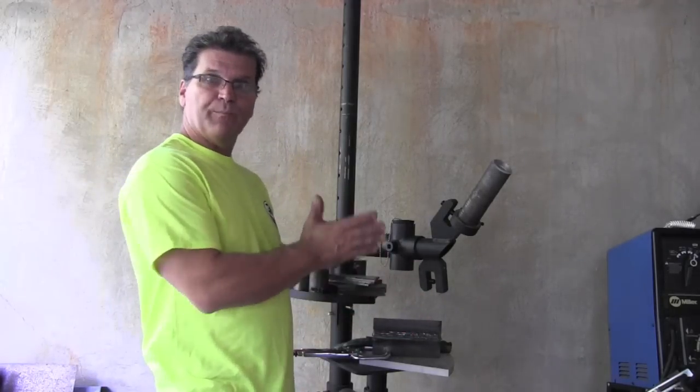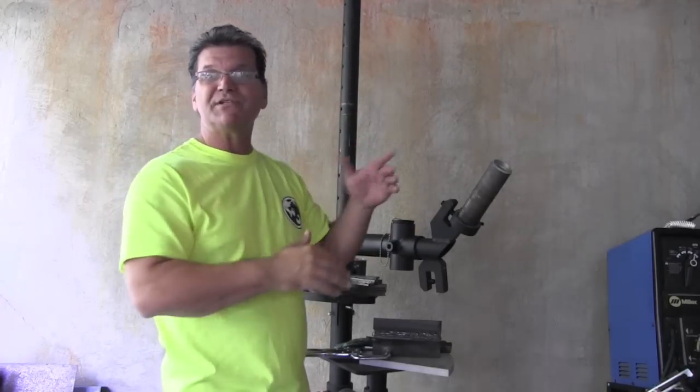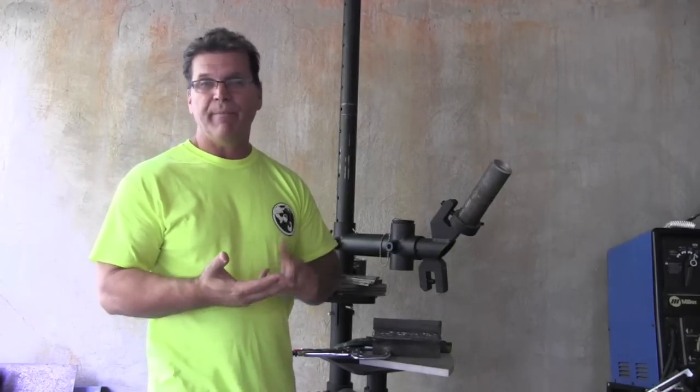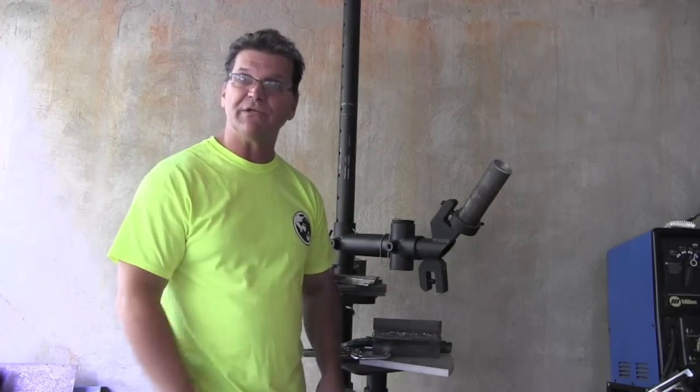And later on, we'll put a T-joint up vertical and do the same thing uphill, and then we'll put one up overhead, and we'll do the same thing overhead, and then we'll tackle the outside corner joints, butt joints, and lap joints and things like that in different positions. So, let's do this.